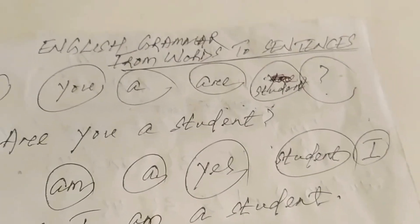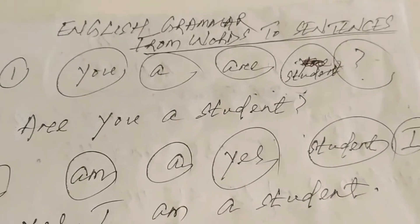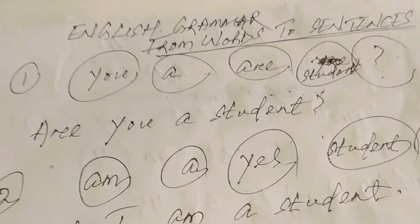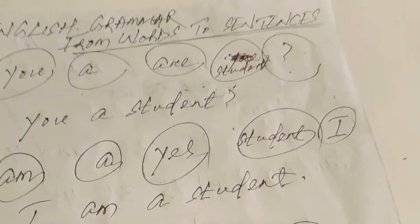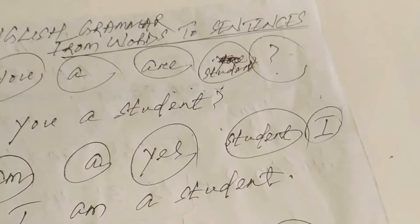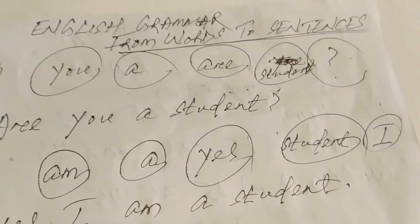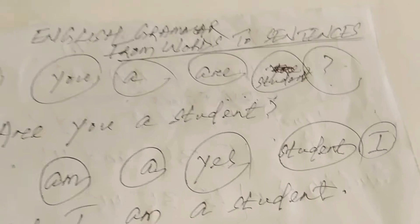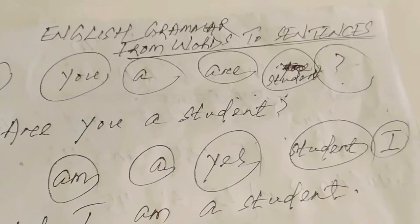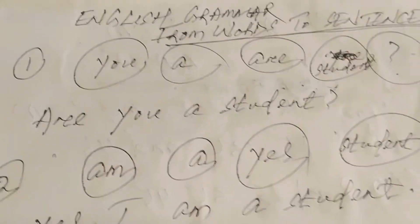How can we rearrange different words to make a sentence? For example 1: you, are, a, student. How can we rearrange these words to make a sentence? Are you a student?